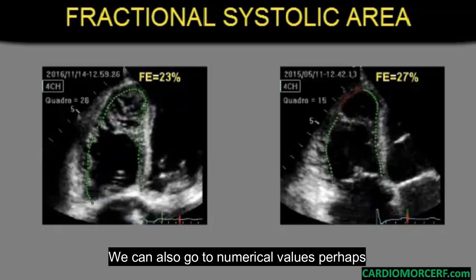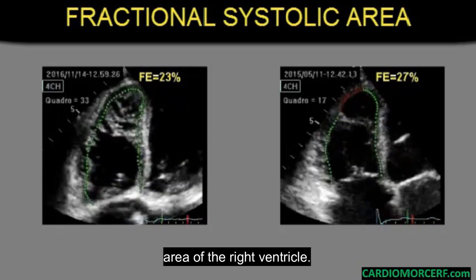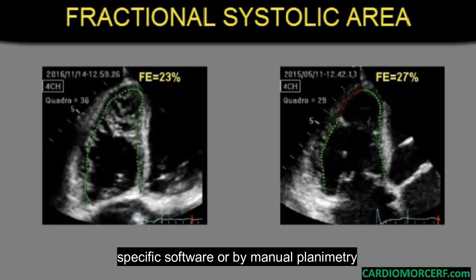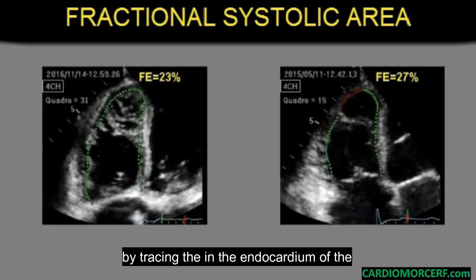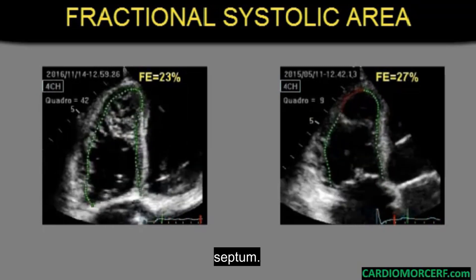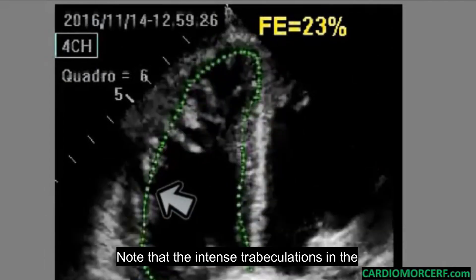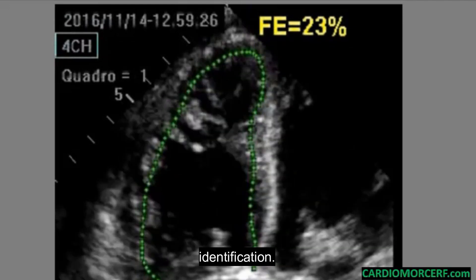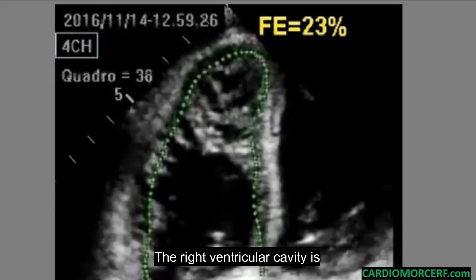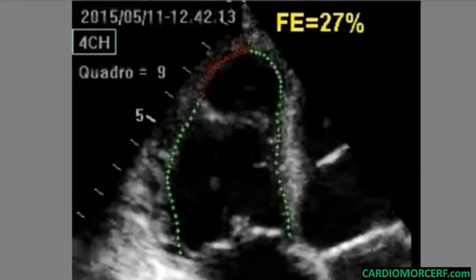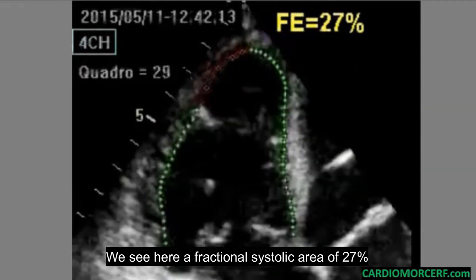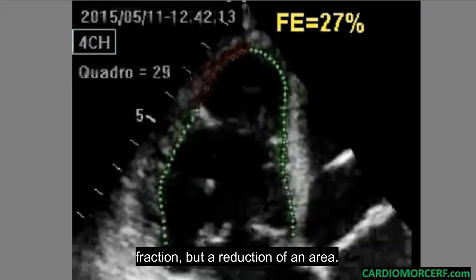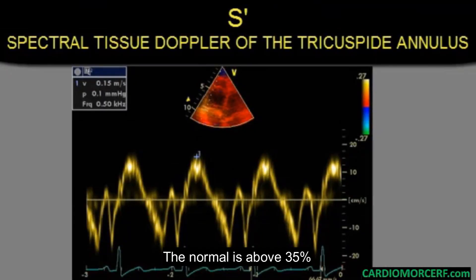We can also go to numerical values. Perhaps the main measure is the fractional systolic area of the right ventricle. It can be obtained automatically by specific software or by manual planimetry, by tracing the endocardium of the anterior wall and the interventricular septum. Note that intense trabeculations in the right ventricular cavity impair the edge detection software for endocardial identification — the right ventricular cavity is underestimated by automatic edge detection. We see here a fractional systolic area of 27%. Note that this measure is not an ejection fraction, but a reduction of an area; the normal is above 35%.